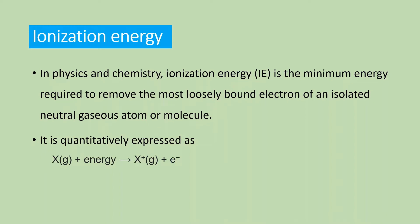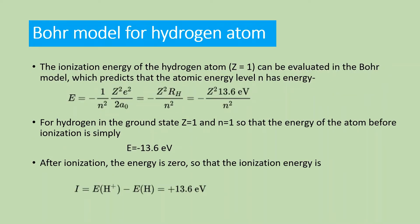It can be expressed by an equation: if you provide some energy to an atom or molecule X in gaseous state, the outer shell electron will be removed and you will get a positive ion. The ionization energy of the hydrogen atom can be evaluated using the Bohr model. According to the Bohr model, the energy is given by E = -Z²(13.6 eV)/n². For ground state, Z=1 and n=1, so the energy before ionization is E = -13.6 eV. After ionization, the energy is 0, so the ionization energy is E(H⁺) - E(H) = 13.6 eV.